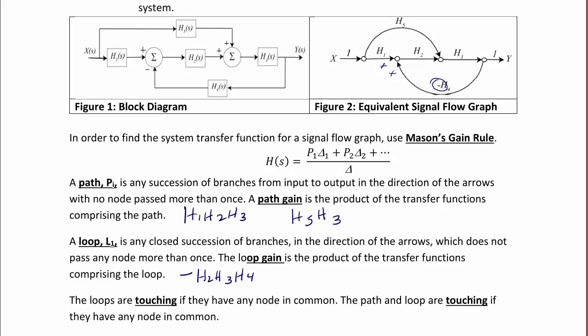The loops are touching if they have any node in common. The path and loop are touching if they have any node in common. So for the signal flow graph we have here, the loop H2, H3, and H4 actually shares a node with both of the paths we defined at either the first or the second node. So in this case, we would say that all paths and loops are touching.